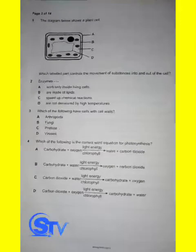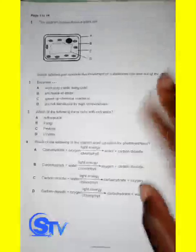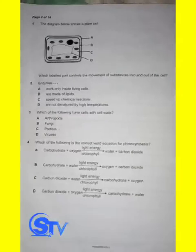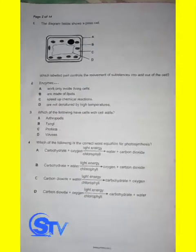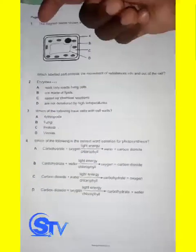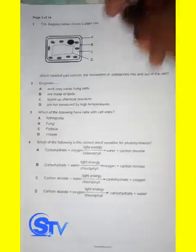Hello, today we are going to revise biology past paper 2013 paper 1. We will begin with the first question. You can see the question says the diagram below shows a plant cell.